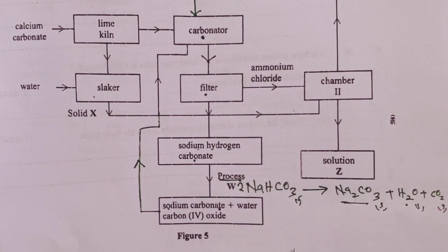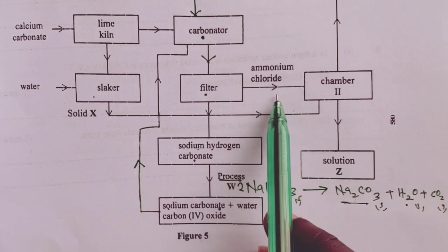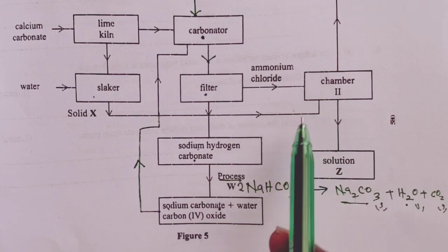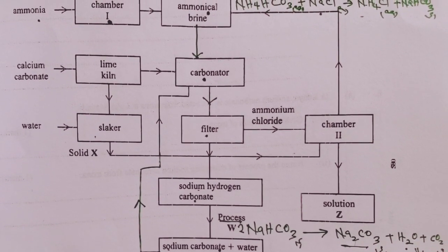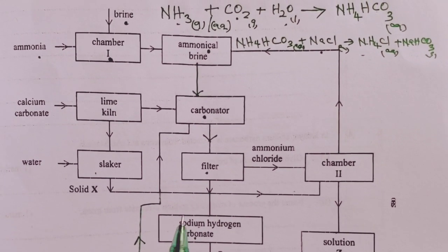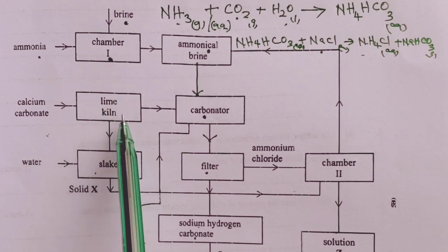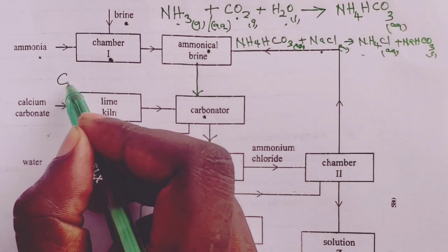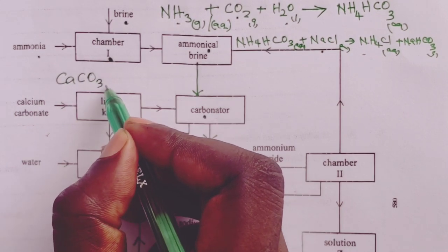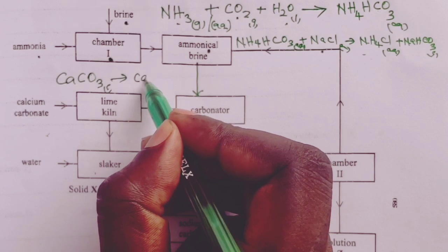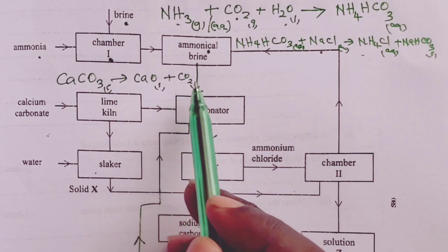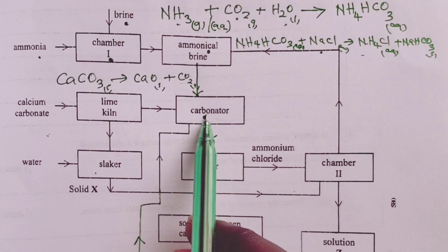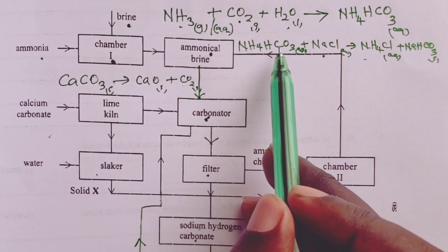Water here will also be recycled back to the slaker as we take our product away, bagged and ready for the market. Now, we left ammonium chloride pending somewhere, so Solvay sought a way of utilizing it. In other parts of the plant, we therefore introduce calcium carbonate in the lime kiln. Here, we heat calcium carbonate or limestone to give us calcium oxide and carbon 4 oxide. This carbon 4 oxide is directed back to the carbonator.